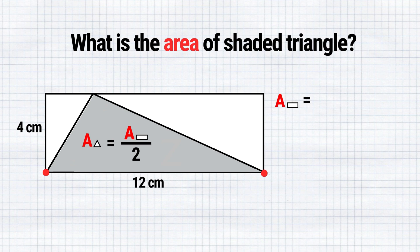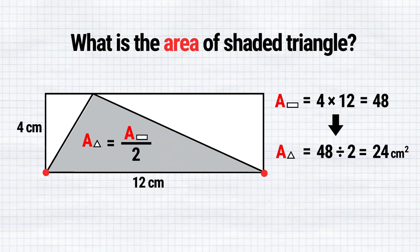So if the area of the rectangle is calculated as 4 multiplied by 12 resulting in 48 square centimeters, then the area of our triangle would be half of 48, which equals 24 square centimeters. To demonstrate that the area of our triangle inside the rectangle is indeed half of the rectangle's area,